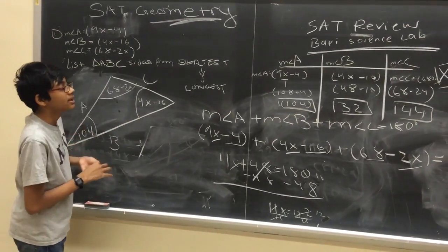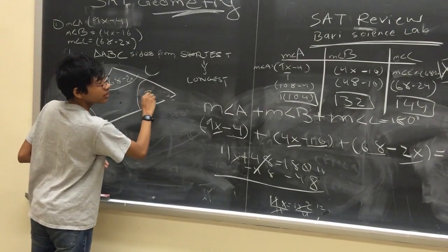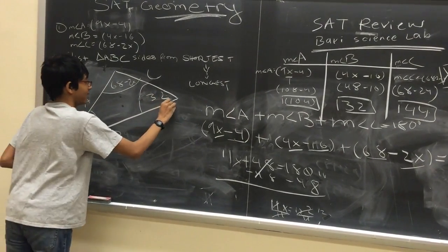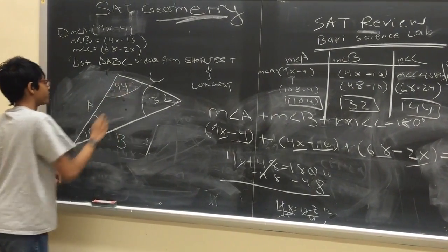Measure of angle B is 32 degrees. Therefore we write this as 32. And the measure of angle C is 44.